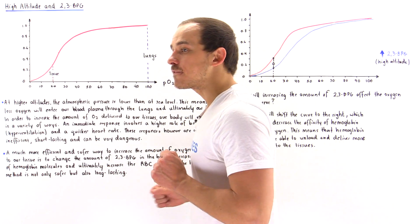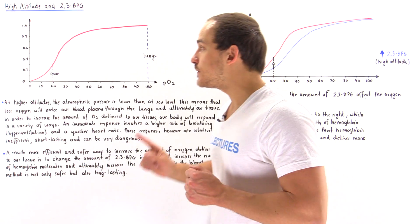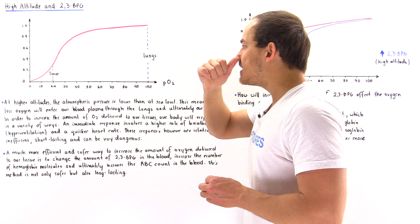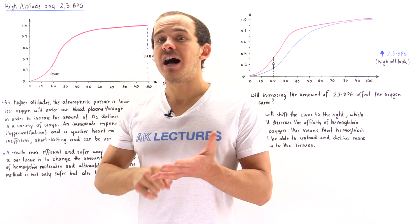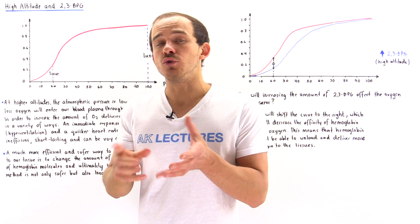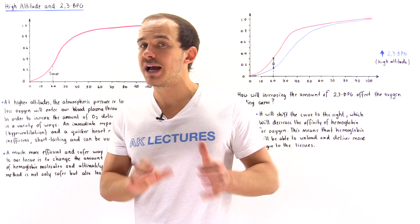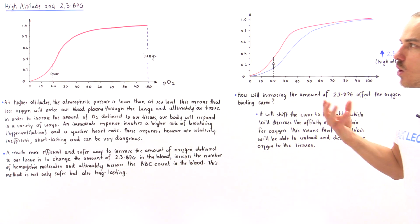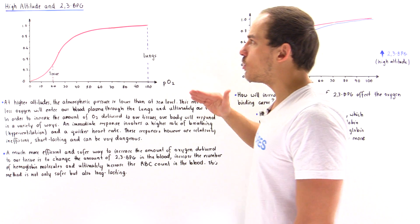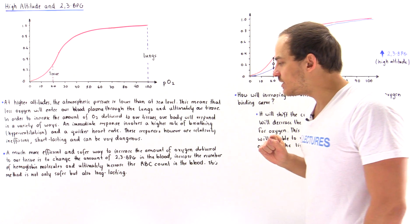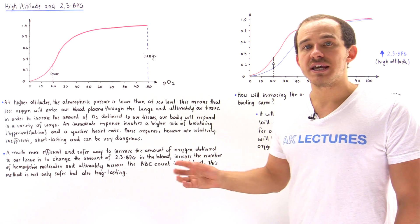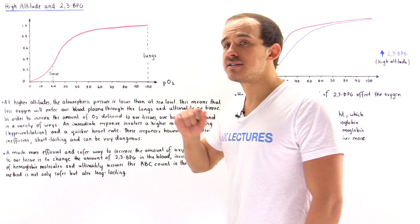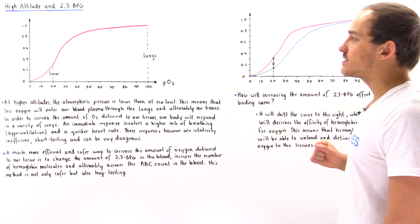A much safer and much more effective and efficient long-term response is to actually increase the concentration of a molecule we call 2,3-BPG. Ultimately, what our body wants to do at high altitude is increase the number of hemoglobin molecules inside our blood and also increase the number of red blood cells found in our cardiovascular system.